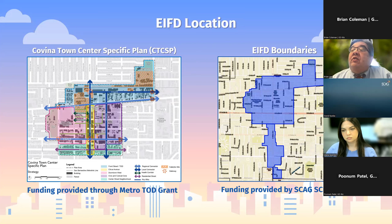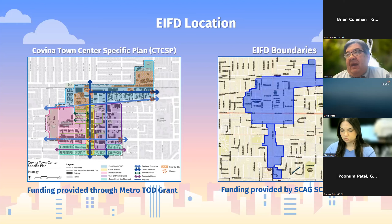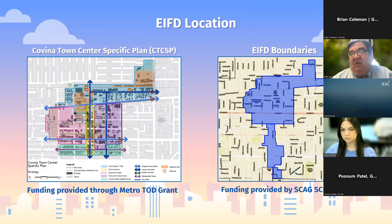The EIFD boundaries were designed to complement the zoning incentives already in place. As a companion tool, the EIFD will, once sufficient bonding capacity is reached, create a dedicated funding stream for projects within those boundaries to assist with economic development in Covina.